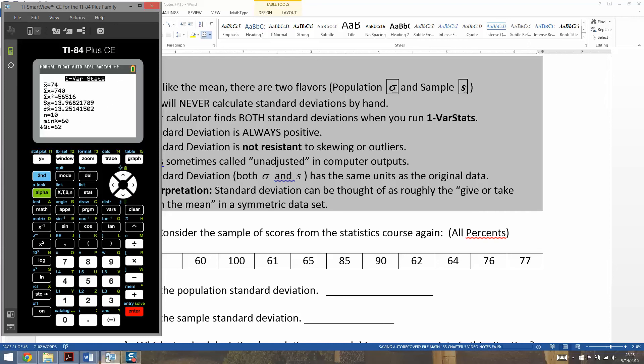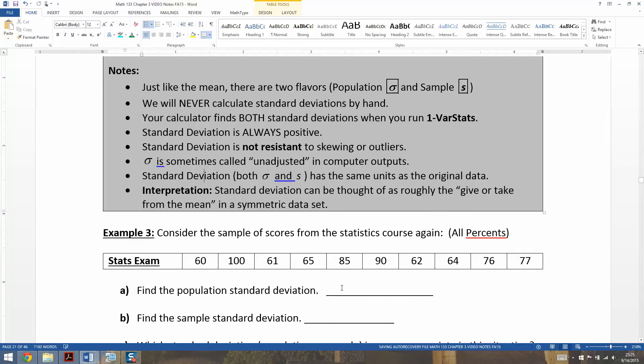And there they are. It's the third and the fourth thing, or no, excuse me, fourth and the fifth. Sx, which is 13.968 and some change, and sigma x, which is 13.251. Those are the two standard deviations. One of them is a population standard deviation, and one is a sample standard deviation. So let me type those up.